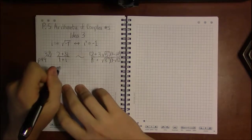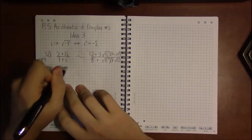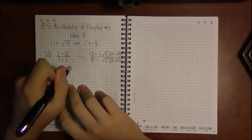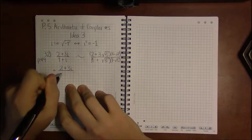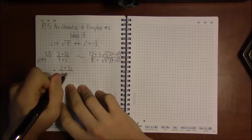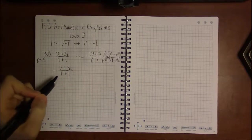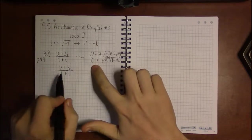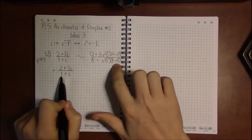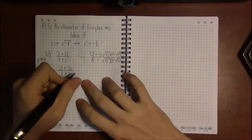We have this idea of the conjugate of a complex number where we change the sign on the square root, or in this case, on i. So instead of the conjugate being 1 minus square root 5, it's going to be 1 minus i.